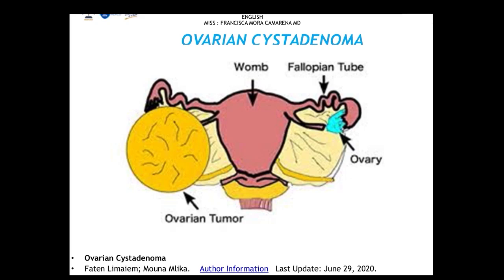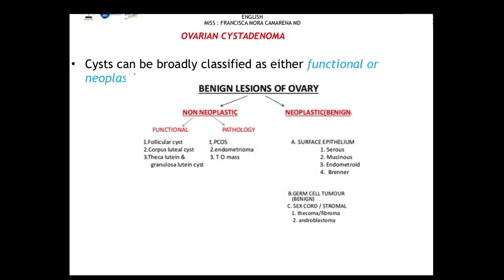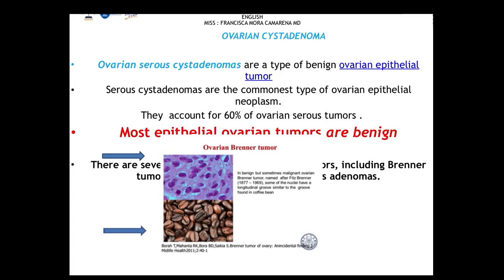Our next topic is ovarian cystadenoma. An ovarian cyst is a sac containing liquid or semi-liquid material arising from the ovary. Cysts are broadly classified as functional or neoplastic, and neoplastic cysts can be benign or malignant. Ovarian cystadenomas are a type of benign ovarian epithelial tumor and are the most common type of ovarian epithelial neoplasm, accounting for about 60% of ovarian cystadenomas, with most being benign.